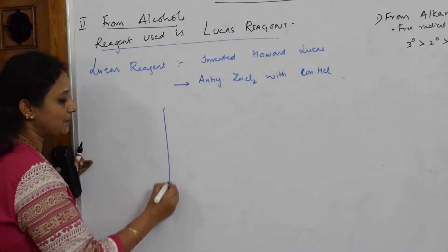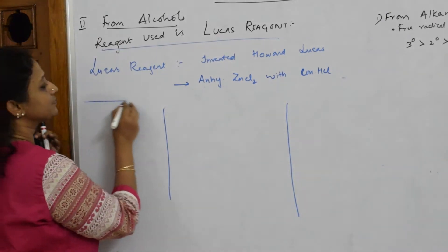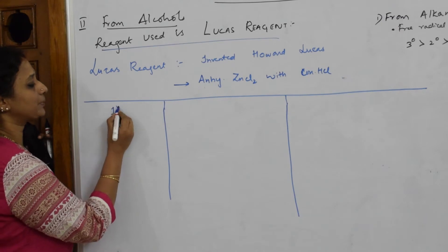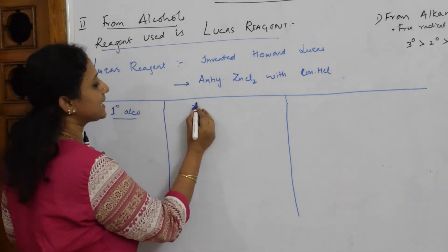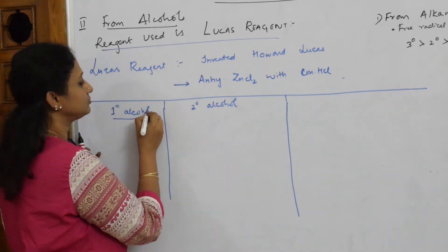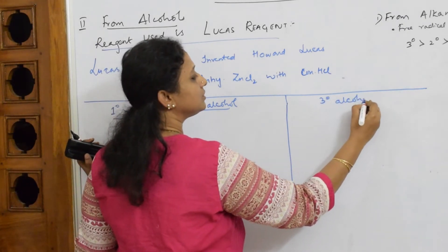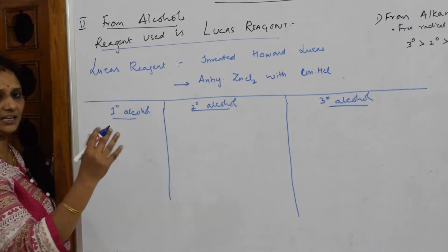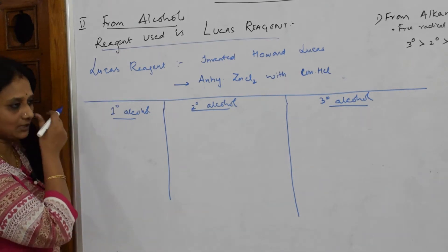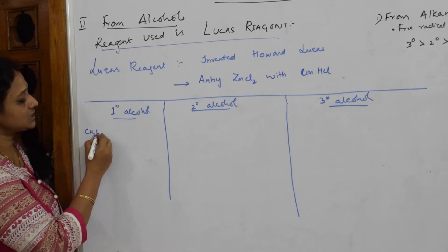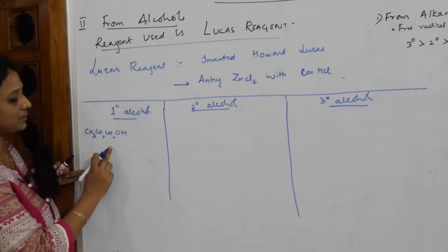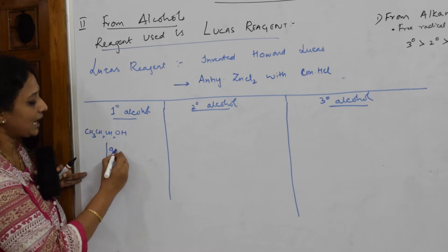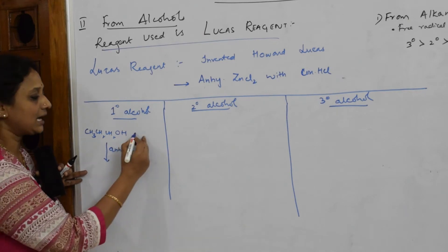Now let me see what I'm going to do. I want to pick up three different types of alcohols. This is your Lucas test. First I'm going to take a primary alcohol, then a secondary alcohol, and then a tertiary alcohol, and I'm going to prepare haloalkanes from each. For the primary alcohol, let me pick up propanol — CH₃CH₂CH₂OH. This is a primary alcohol because it has two hydrogens on the alcoholic carbon.